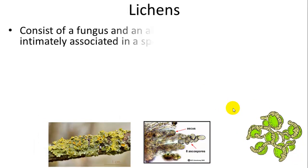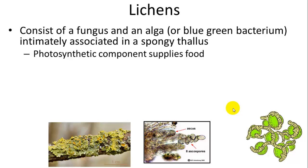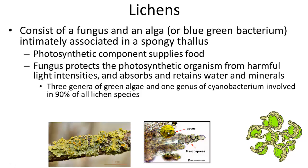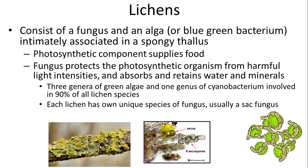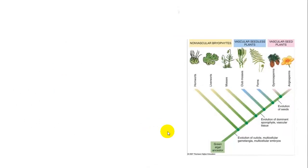I just want to briefly mention lichens, which are a mutualistic relationship between a fungus and an algae, or a fungus and a cyanobacterium. The cyanobacterium or algae provides the photosynthetic sugars for the fungus, and the fungus protects them from harmful light intensities and absorbs and retains water and minerals. You can see these all over trees and rocks. Three genera of algae and one genus of cyanobacterium are found in 90% of all lichen species, and each lichen has its own unique species of fungus — usually a sac fungus — and they're identified according to their fungus.